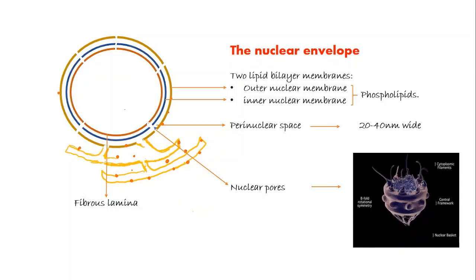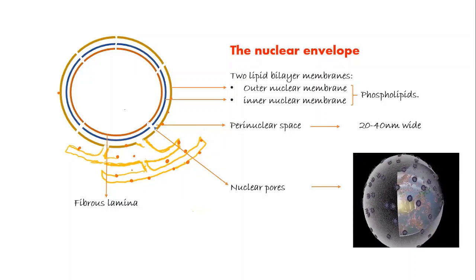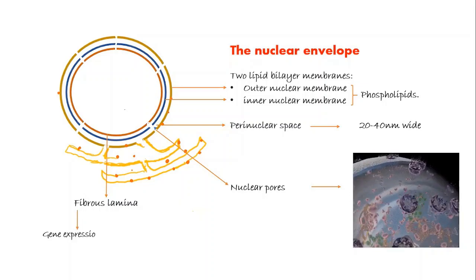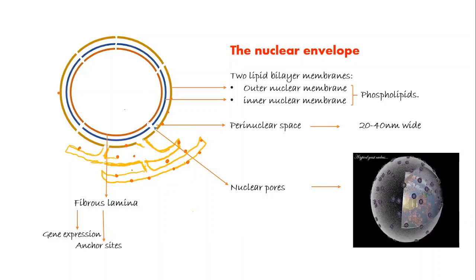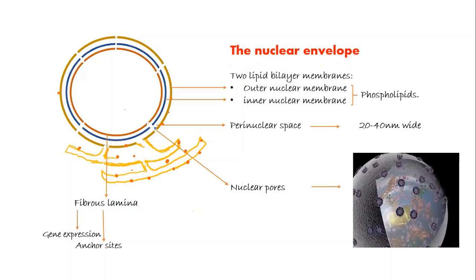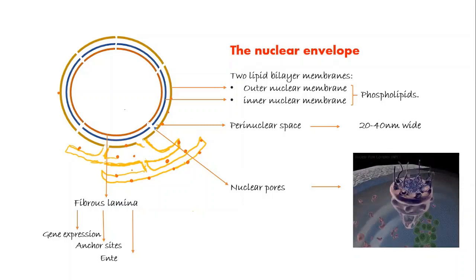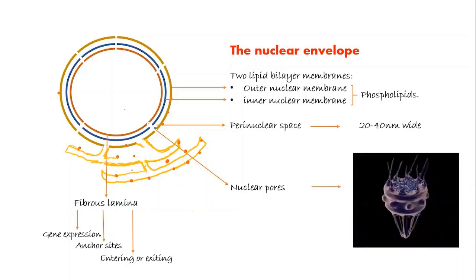Some of the other functions of the nuclear lamina include it can play a role in regulating gene expression, serves as anchor sites for the pore complexes of the nuclei, and regulates the material entering and exiting the cell.